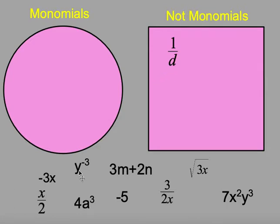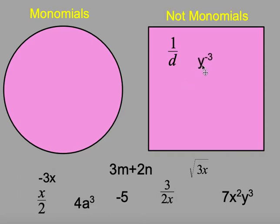When I have y to the negative three, remember that y to the negative three is the same thing as one divided by y cubed. So for that reason, I'm going to classify that as not a monomial, because that negative exponent is the same as writing one over y cubed.